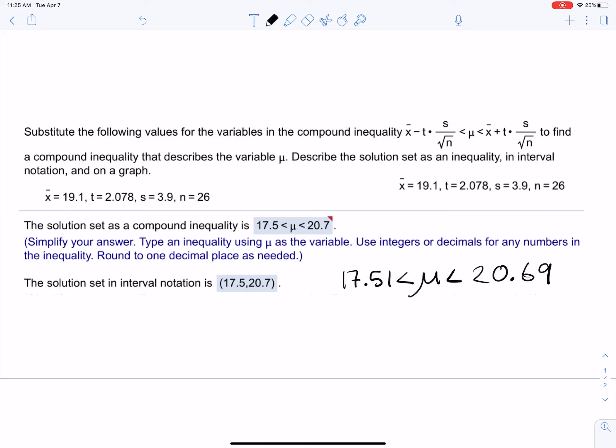So that is inequality notation. The other notation that we want is interval notation, and that's easy. You just write it as (17.51, 20.69), and then you just put parentheses on the left and right-hand side.